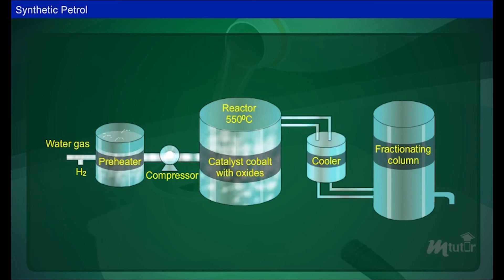The mixture of olefins and straight chains are passed through a condenser where crude oil is obtained. The crude oil is then passed to the fractionating column to get gasoline.